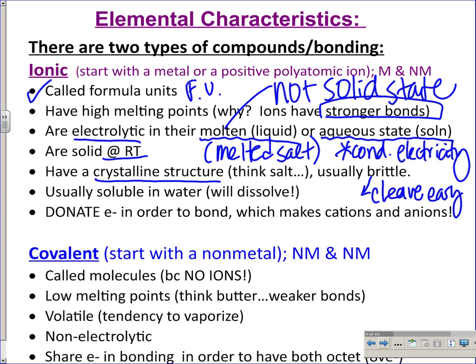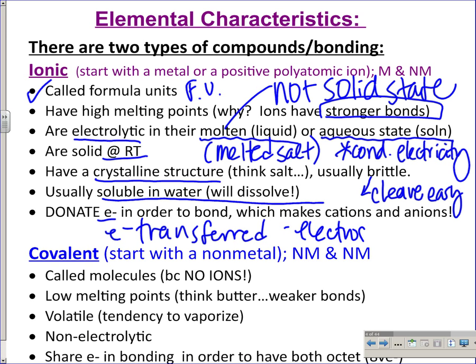Soluble means it will dissolve in water. Ionic bonds involve electron transfer — electrons are donated — and the bond is not truly a sharing bond; it's more of an electrostatic attraction.